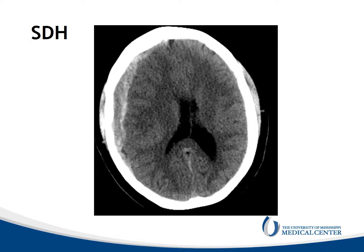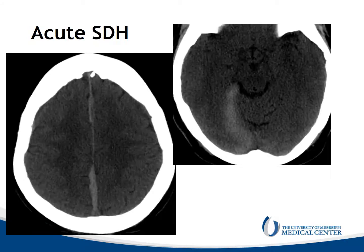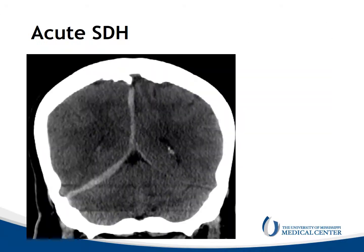This is a subdural hematoma. We can see that there is a right whole-hemispheric crescent-shaped hyperdense collection, and it is causing midline shift and mass effect. Here is another acute subdural hematoma. Again, we can see that it's along the right aspect of the falx and the right tentorium, and it does not cross the tentorium or the falx.